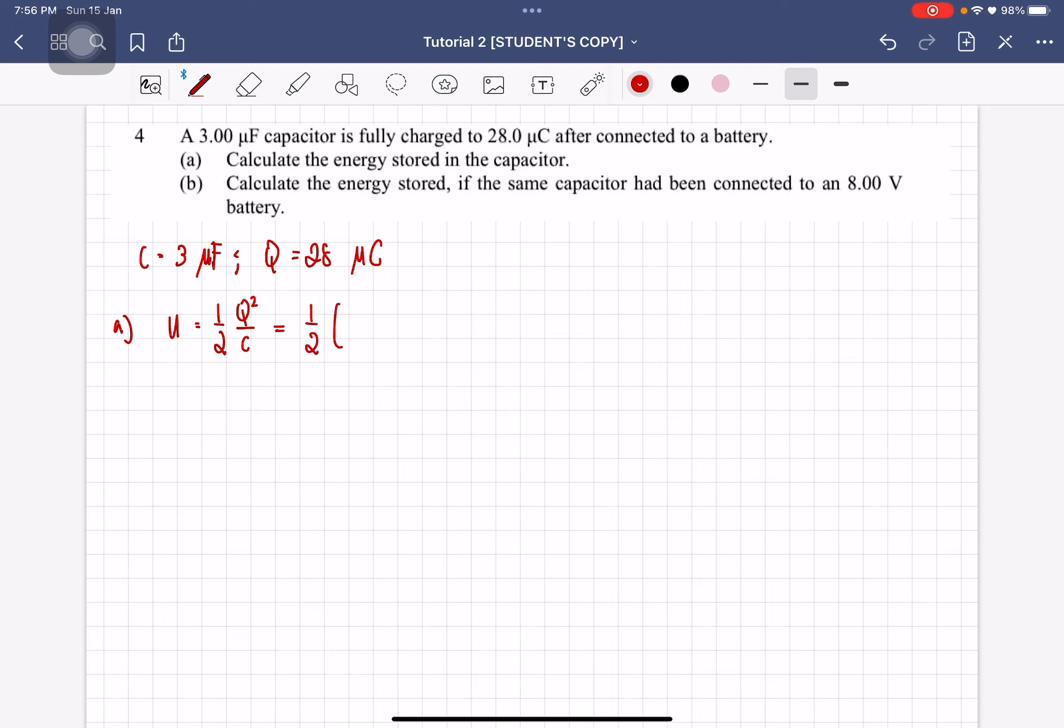So this is going to be half, 28 × 10^-6 squared, divided by the value of capacitance which is 3 × 10^-6, which is going to give you 1.31 × 10^-10 joule. Okay.